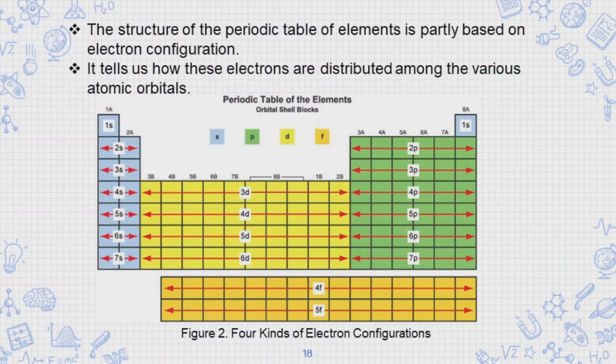The structure of the periodic table of elements is partly based on electron configuration. It tells us how these electrons are distributed among the various atomic orbitals.